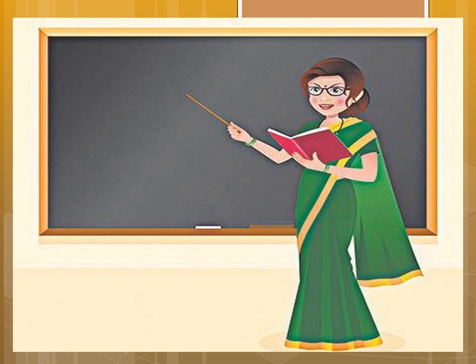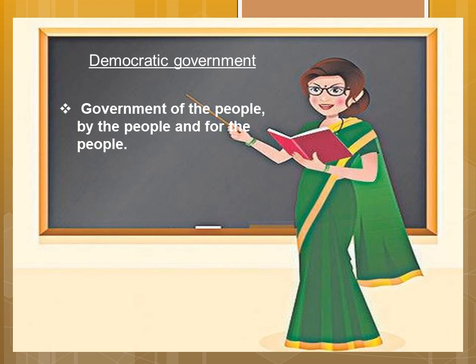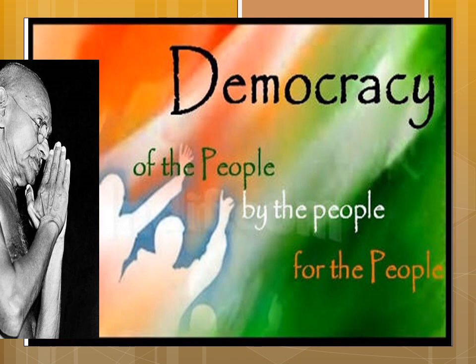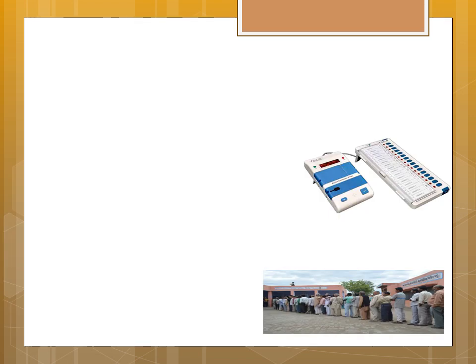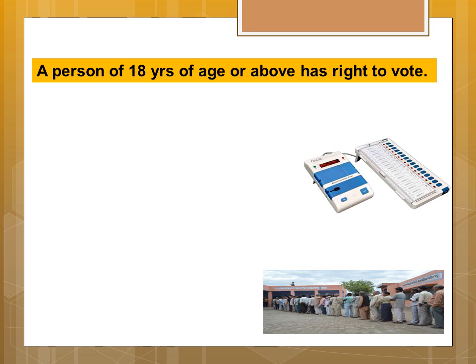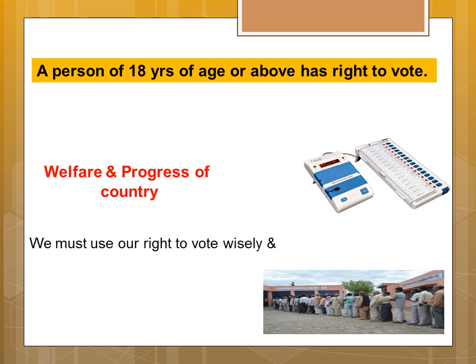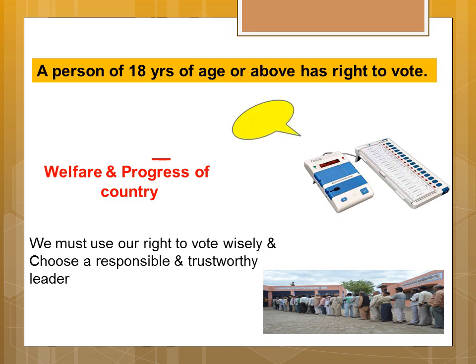Children, India has a democratic government. This means the citizens have a right to choose who they want as their leaders, and they do this by voting. A citizen may also choose to run for a position in the government. Hence, a democratic government is often referred to as a government of the people, by the people and for the people. For the welfare and progress of the country, it is important for its citizens to participate in the elections. A person of 18 years of age or above has the right to vote. We must use our right to vote wisely and choose a responsible and trustworthy leader.